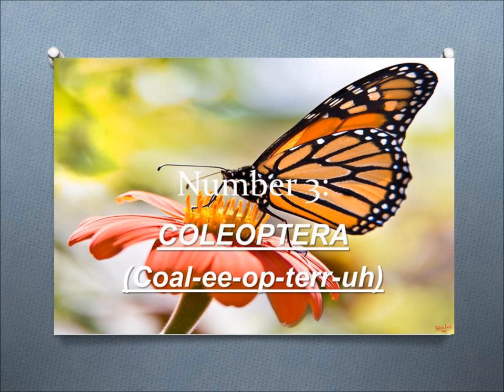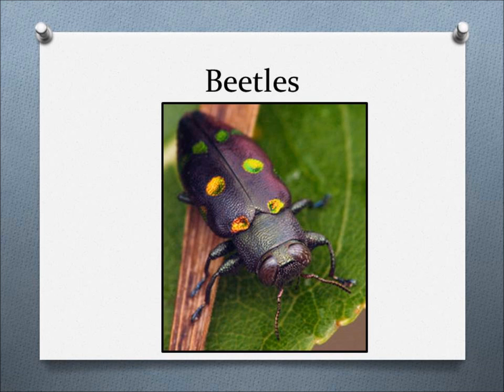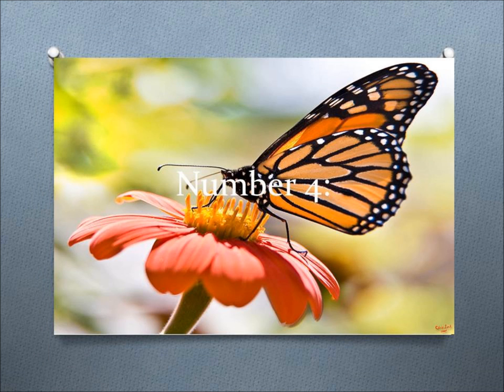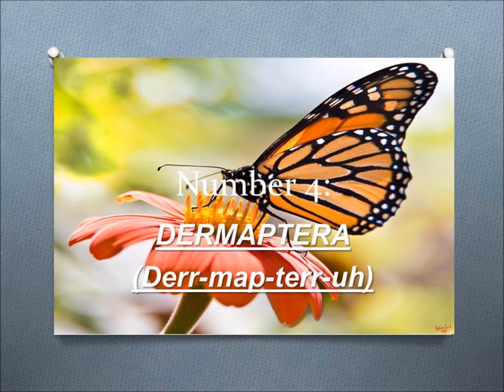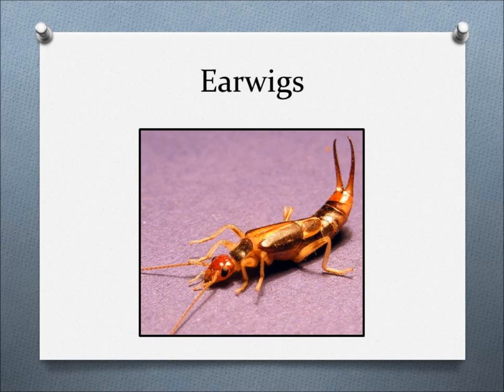Number 3, Coleoptera. This order includes beetles, which have over 350,000 described species — more beetle species alone than any other species out there. Number 4, Dermaptera. This order includes earwigs, which are known for the appendages at the end of their abdomens and have been rumored to crawl into your ear.